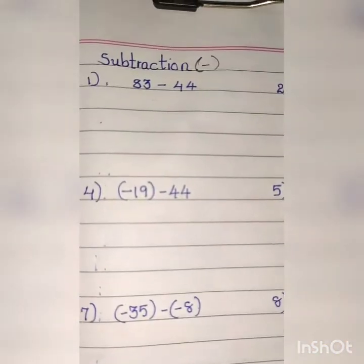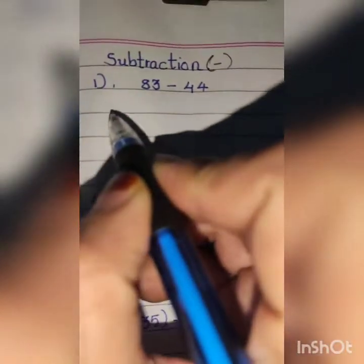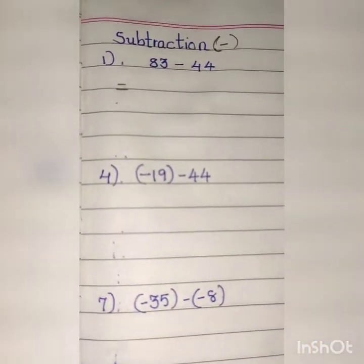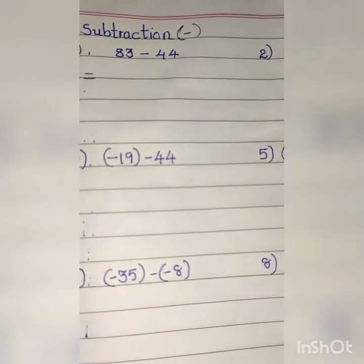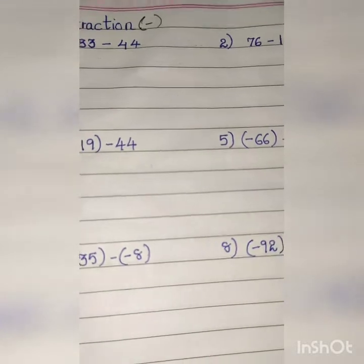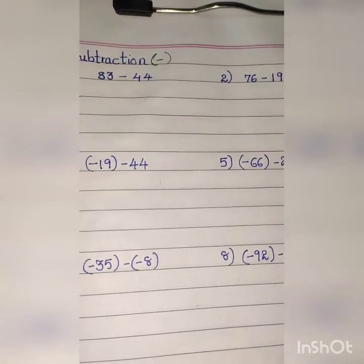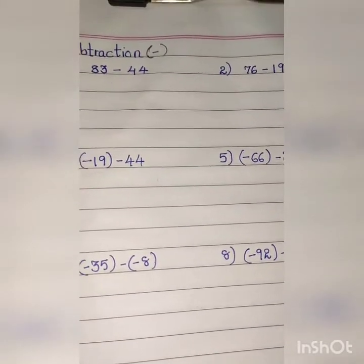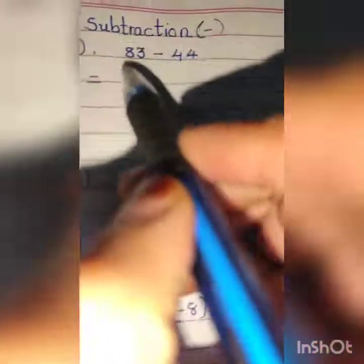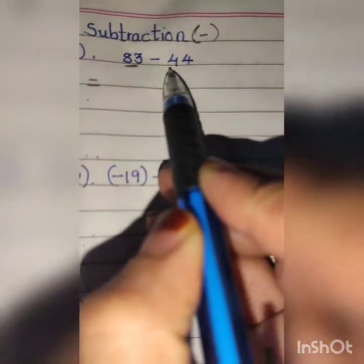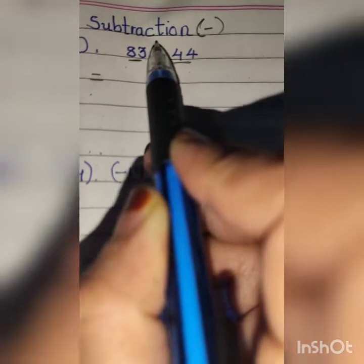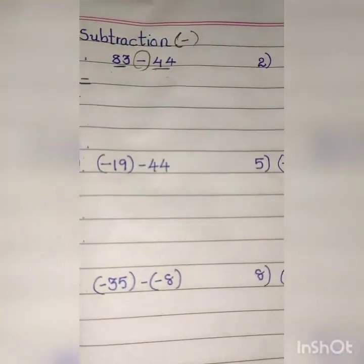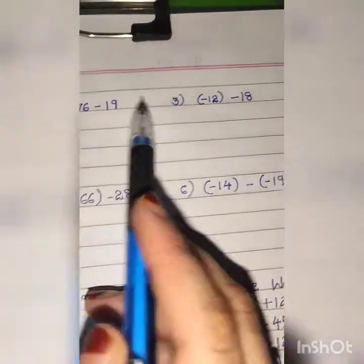For addition, we classified it this way: both positive integers, one positive one negative, and then both negative. For subtraction also, we will move in the same way. First we will take both positive integers. As you can see, 83 and 44 — both are positive integers and here is the sign of subtraction. Similarly, this sum we will do.